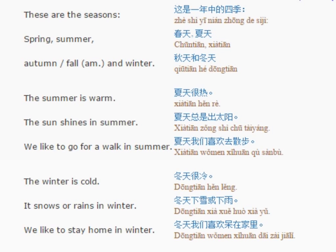四季和天气. These are the seasons. 这是一年中的四季。 Spring, Summer, Autumn and Winter. 春天,夏天,秋天和冬天。